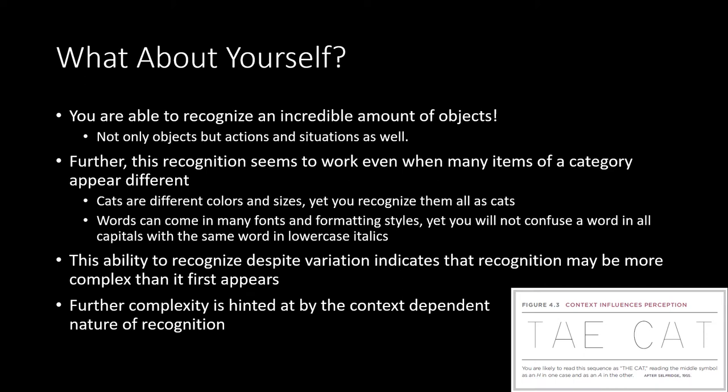One of the most fascinating things about recognition is that it works even though many different items within a single category vary in appearance. Think about all the cats you've seen — they come in a wide variety of colors, sizes, and coat types, some extremely fluffy, some with no hair at all, and yet all of them are easily recognized as cats. This was actually one of the biggest challenges in developing computer vision: getting machines to recognize that very different-looking things are in fact the same category.